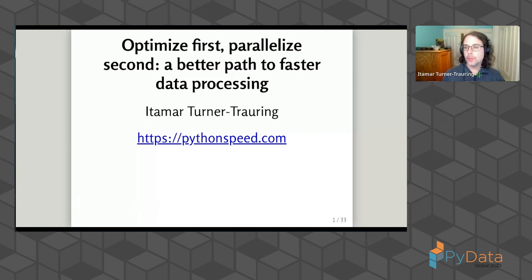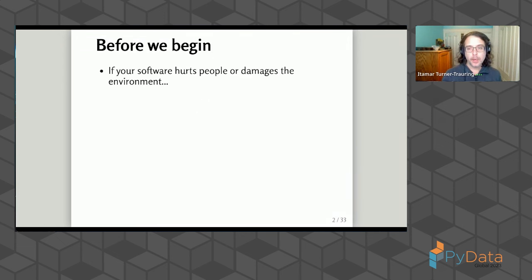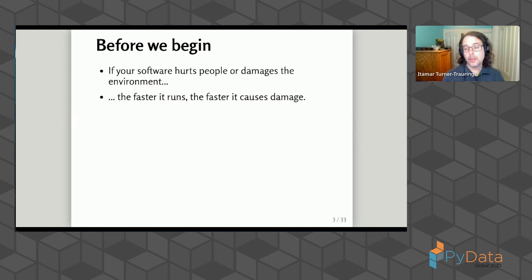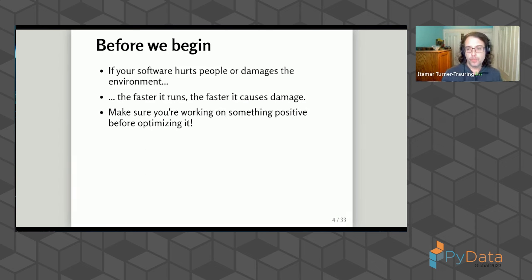What should you do first? What should you do second? Before we start talking about software performance, you should be thinking about whether or not the software you're writing should exist at all. If your software hurts people or damages the environment, then if you make your software faster, you're just causing damage faster. So before thinking about should this software be faster, think about should this software exist at all. If it shouldn't, you can go find a different job and then think about software performance.